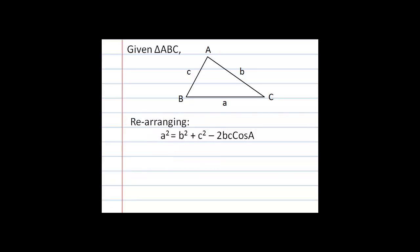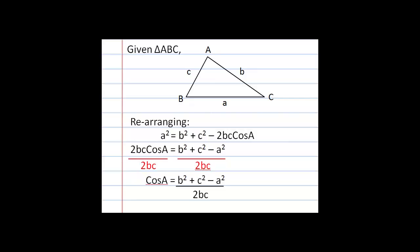The cosine law is also used when given three sides to solve for an angle. Starting from a² = b² + c² − 2bc·cosA, I isolate cosine of A. I move the −2bc·cosA term to the left and a² to the right, switching signs, giving 2bc·cosA = b² + c² − a². Dividing both sides by 2bc, I get: cosA = (b² + c² − a²) / (2bc).